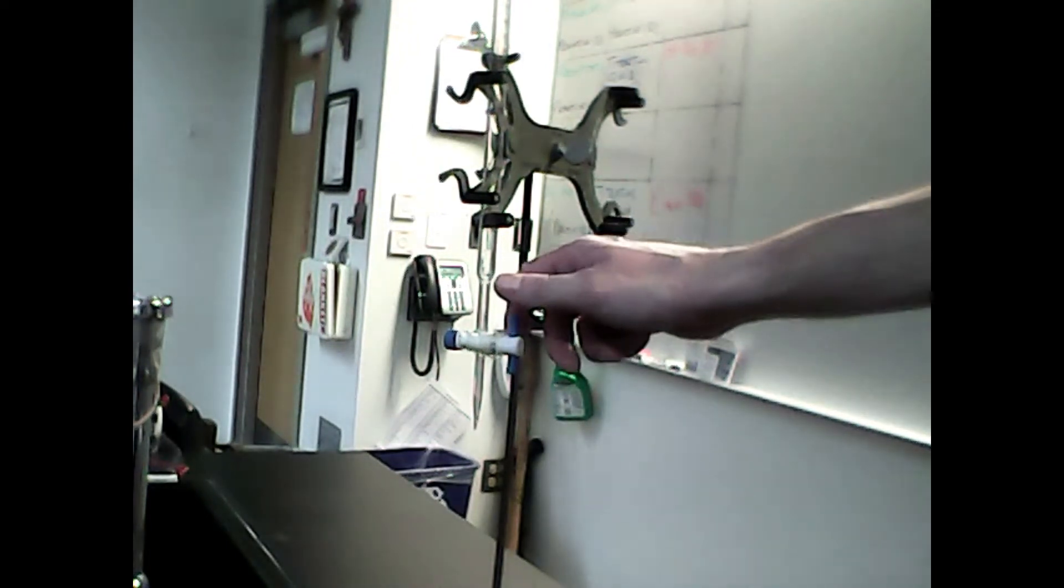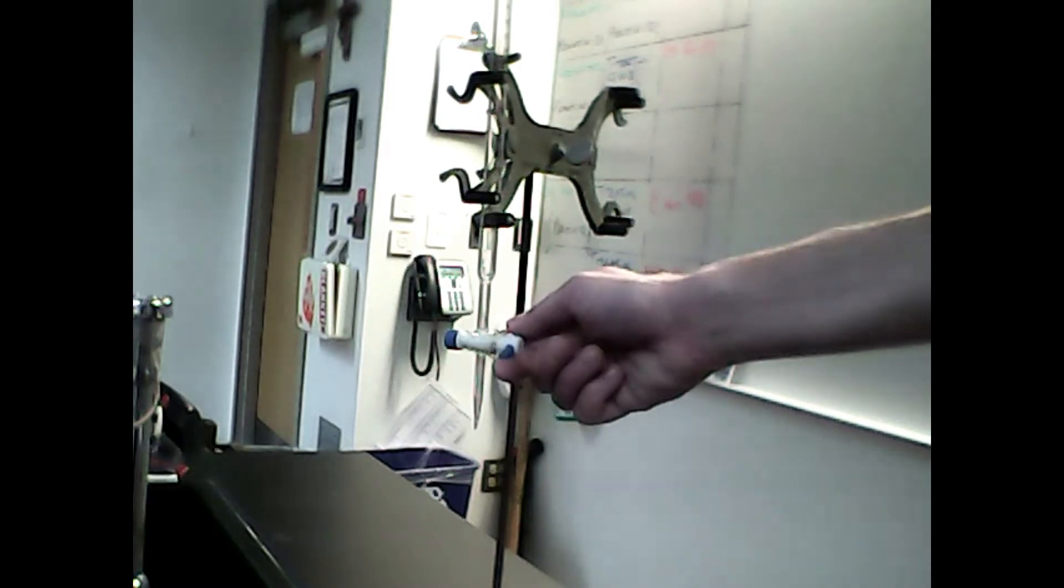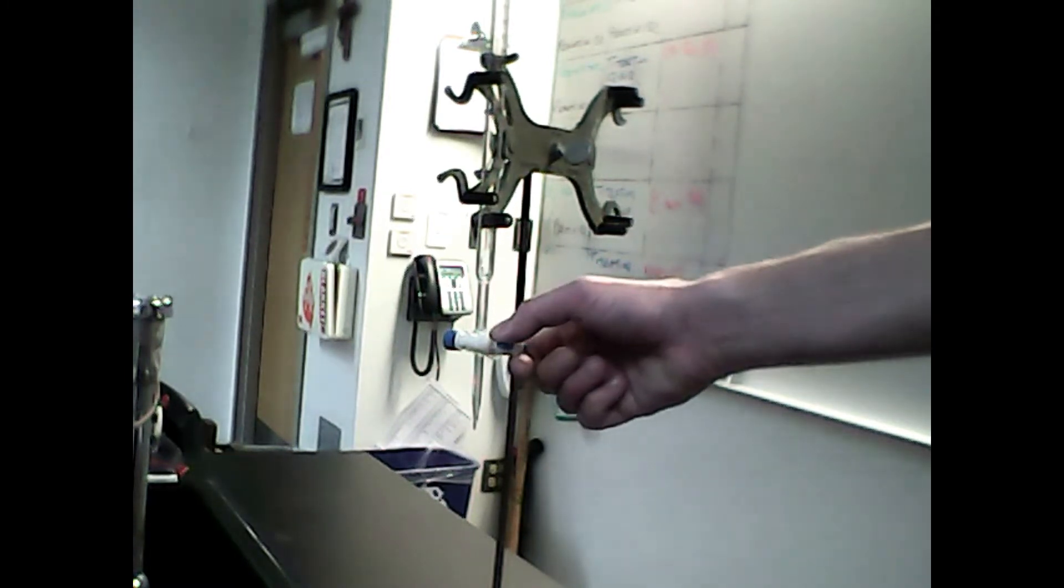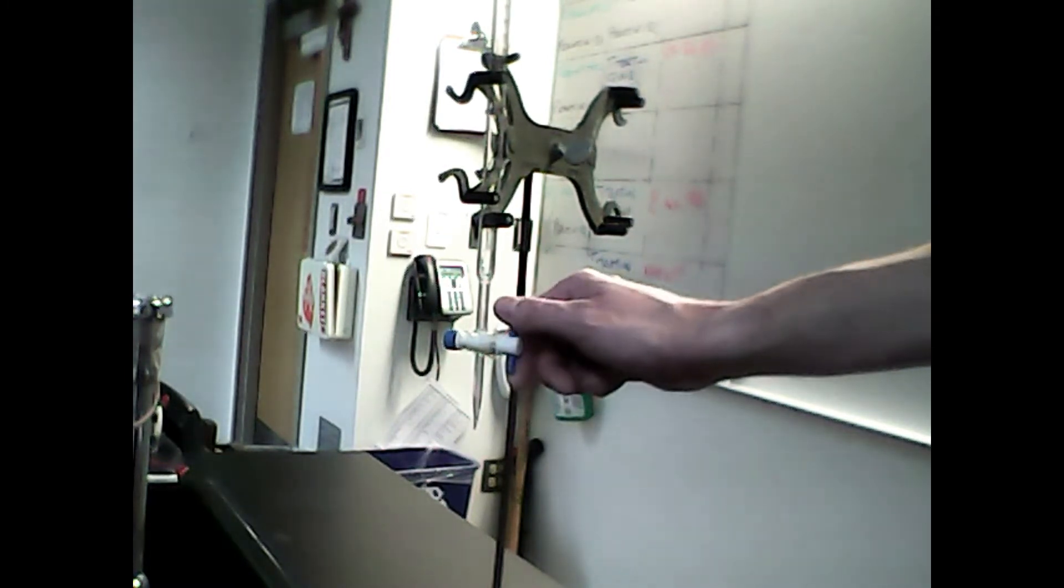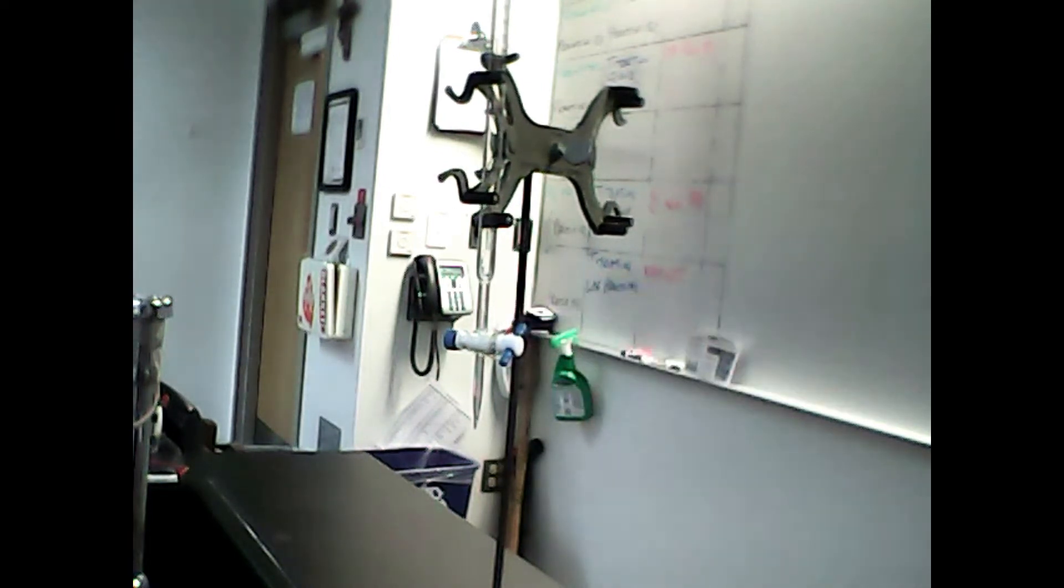We do that simply by turning this knob. This would be off, and this is on. Of course, you can regulate the speed at which your solution is metered out by how far you turn this valve.